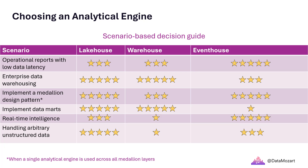Implement a medallion design pattern: refers to a design pattern where data goes through multiple layers — usually bronze, silver, and gold — on its way from ingestion to consumption-ready. In real life, there are dozens of scenarios where a medallion pattern is implemented by combining multiple analytical engines. One of the most common implementation methods is leveraging the lake house for the bronze and silver layers and a warehouse for the gold layer. The event house would be a good fit when implementing a medallion pattern for streaming data.